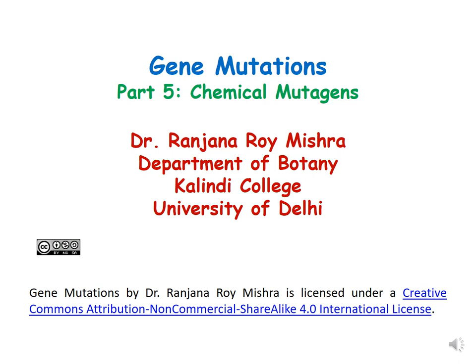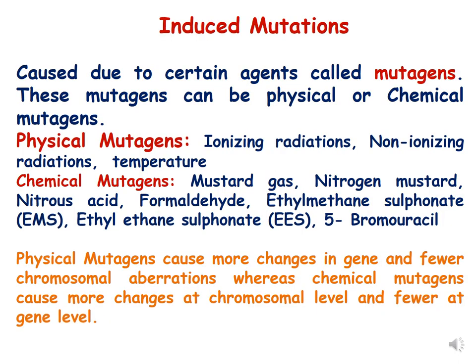Hello dear students, this is part 5 of the gene mutation series and we will be discussing chemical mutagens. As we have already discussed in previous lectures, mutations are of two types: spontaneous and induced mutations. Induced mutations are caused by certain agents called mutagens, and these mutagens can be physical or chemical. Physical mutagens, already discussed in a previous lecture, include ionizing radiations, non-ionizing radiations.